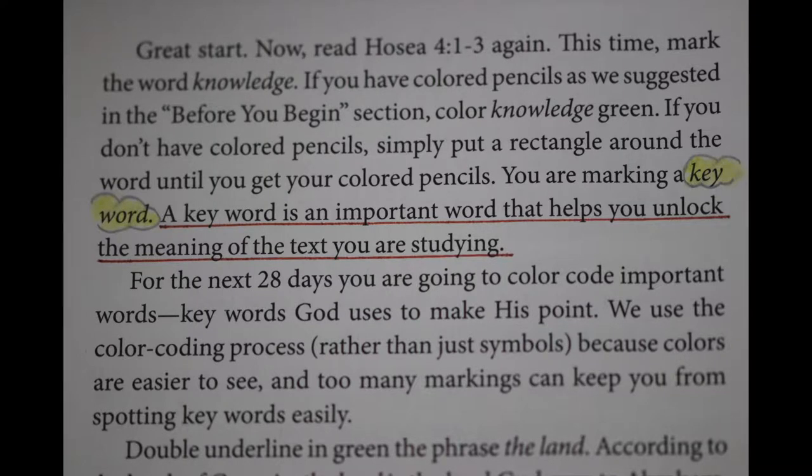Yesterday, on day two, when you read 2 Kings 22:1 to 20 and marked the references to King Josiah, you undoubtedly noticed that this chapter is about finding the book of the law which had been lost in the house of the Lord. You probably noticed quite a few references to the book of the law and to the house of the Lord — these are key phrases that will help us understand more about the chapter. A key word is an important word that helps you unlock the meaning of the text you are studying, and a key phrase does the same thing.